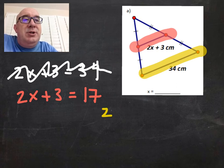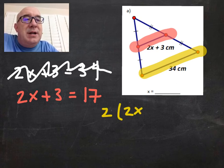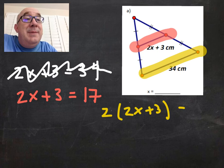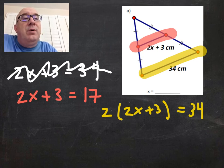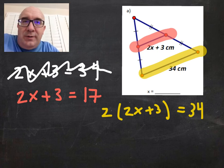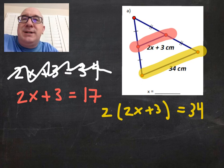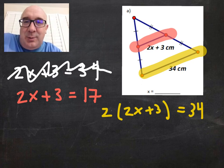Another way to do it would be to double the 2x plus 3 and make that equal to 34. These would both solve out the same, but just keep an eye on that. It's a typical error. We see it quite a bit.